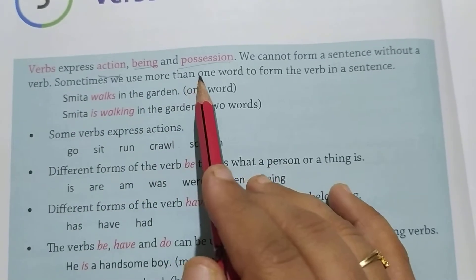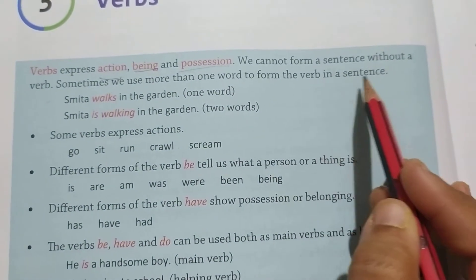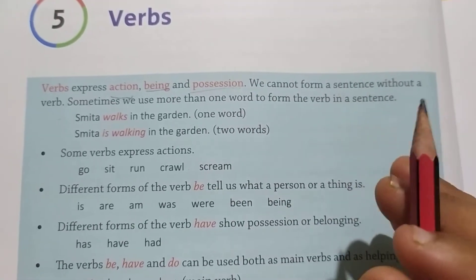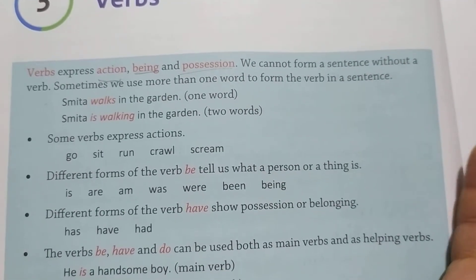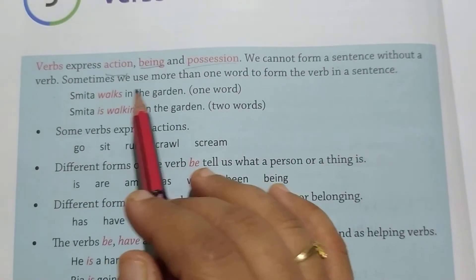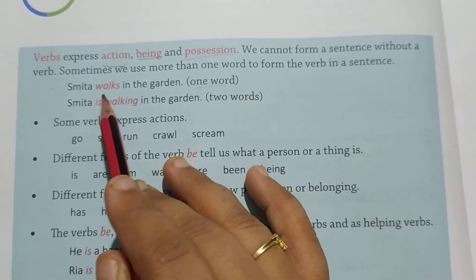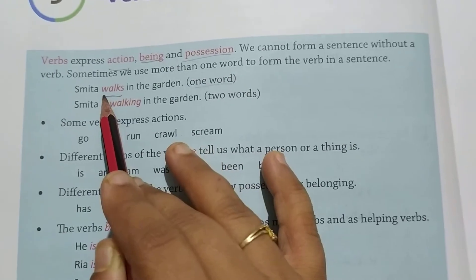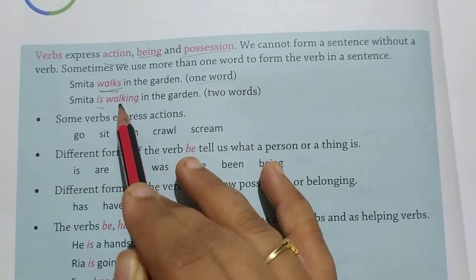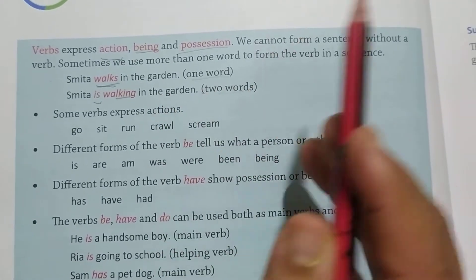Sometimes we use more than one word to form the verb in a sentence. Kai baar hum sentence banane ke liye ek se zyada verb use karte hain. For example: 'Smita walks in the garden' — yahan ek word use hua hai, that is only 'walks'. Aur 'Smita is walking in the garden' — yahan doh words use hain.